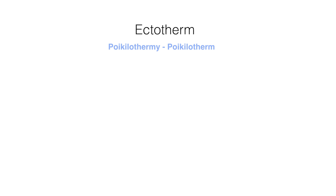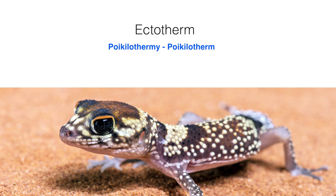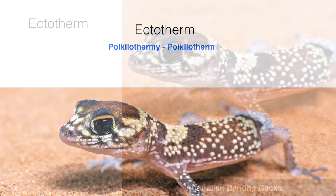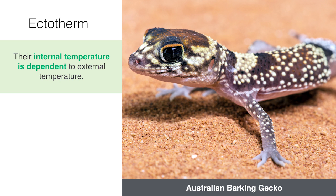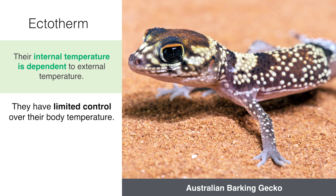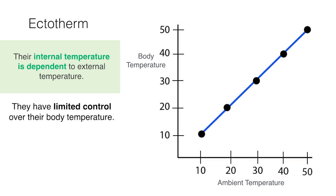By contrast, ectotherms are also known as poikilotherms, which is an organism whose internal temperature varies widely. Instead of homeostasis, poikilotherms undergo a different process called poikilothermy. All it means is that an ectotherm has only limited control over their body temperature and that it is dependent on the external environment's temperature. When the external temperature goes up, an ectotherm's body temperature will also go up, and the same happens in the opposite direction. This is why ectotherms undergo many behavioural responses towards temperature changes but do not undergo physiological responses. Whilst they can minimise the change in body temperature to an extent, their body temperature fluctuates with the environment — basically, their insides don't respond to change.